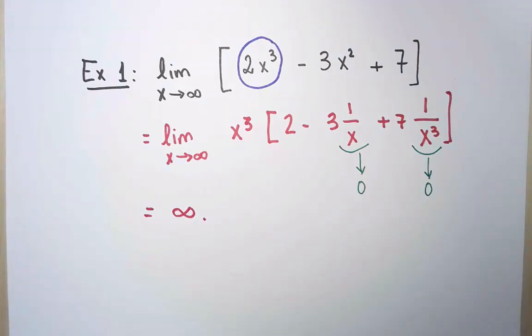So to calculate the limit of a polynomial, look only at the term with the biggest exponent, and if you need to justify why, this is the reason.